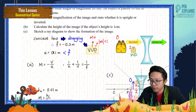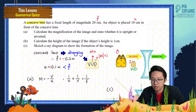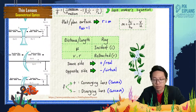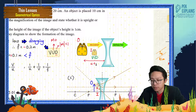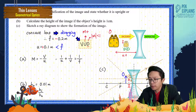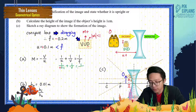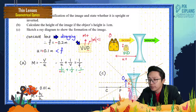The object distance u is positive because the object is on the same side as the incident ray. So u = +0.1 m. The focal length is negative because it is a diverging lens, so f = −0.2 m. Substituting: 1/0.1 + 1/v = 1/(−0.2).